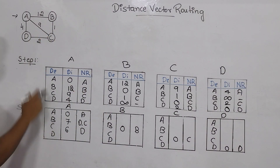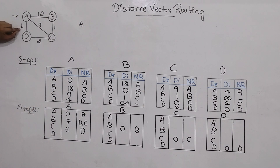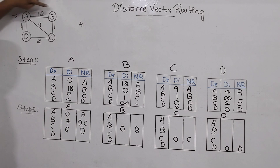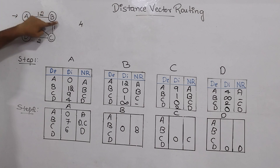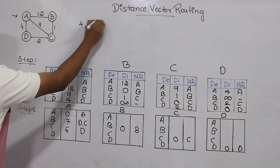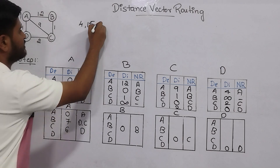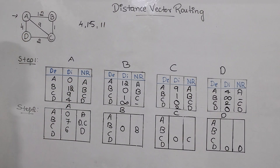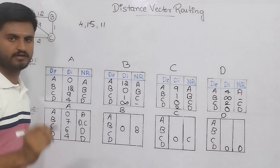From A to D, I can go directly with the shortest distance of 4. Or I can move A→B→C→D: 12 + 1 + 2 = 15. Or A→C→D: 9 + 2 = 11. The smallest path is 4. So I write 4, and since I came directly from A to D, I just write D as the next router.